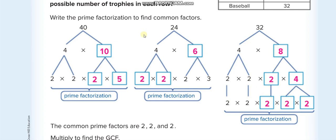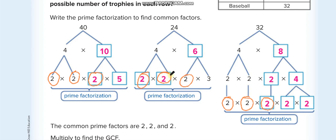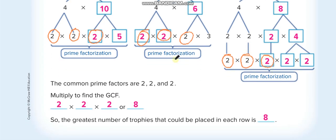Now choose the common factors — the ones that appear in all of their prime factorizations. 2 appears here, here, and here — there's a second 2, another 2, and a third 2 in each. 5 is not in all of them, and 3 is not in all of them, so we skip those. The common factors are three 2s, so we multiply: 2 times 2 is 4, times 2 equals 8.